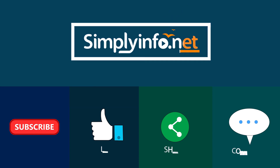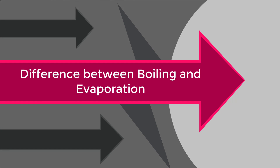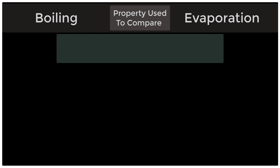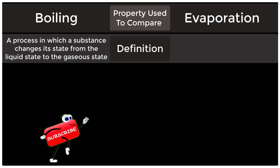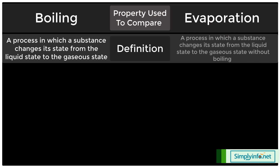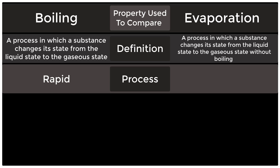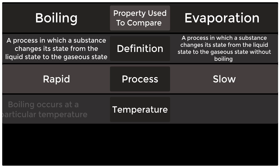The difference between boiling and evaporation. Definition of boiling: a process in which a substance changes its state from the liquid state to the gaseous state. Definition of evaporation: a process in which a substance changes its state from the liquid state to the gaseous state without boiling. Process in boiling: rapid process. Process in evaporation: slow.